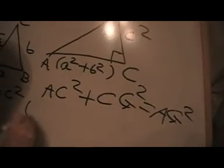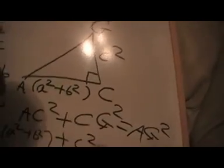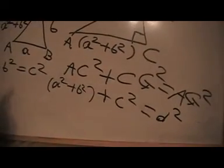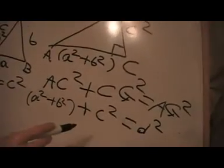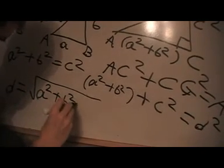AC is a squared plus b squared, and that's equal to this length which we're gonna call d squared. And then to find d, all we do is square root both sides. So therefore d is equal to the square root of a squared plus b squared plus c squared, which is the formula we started with up here. So that's the proof.